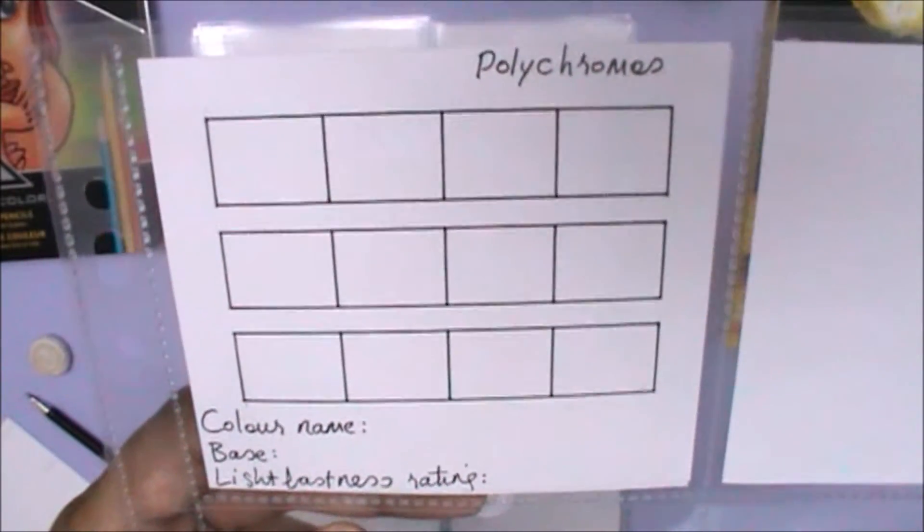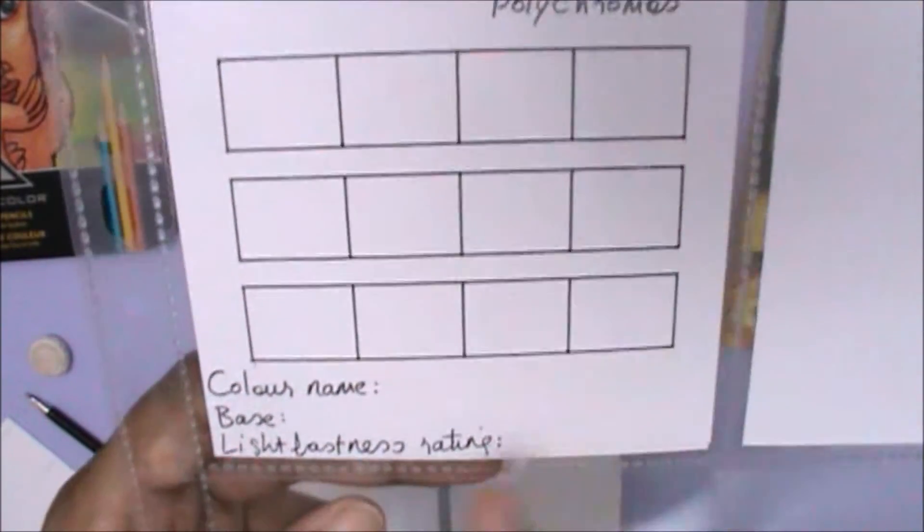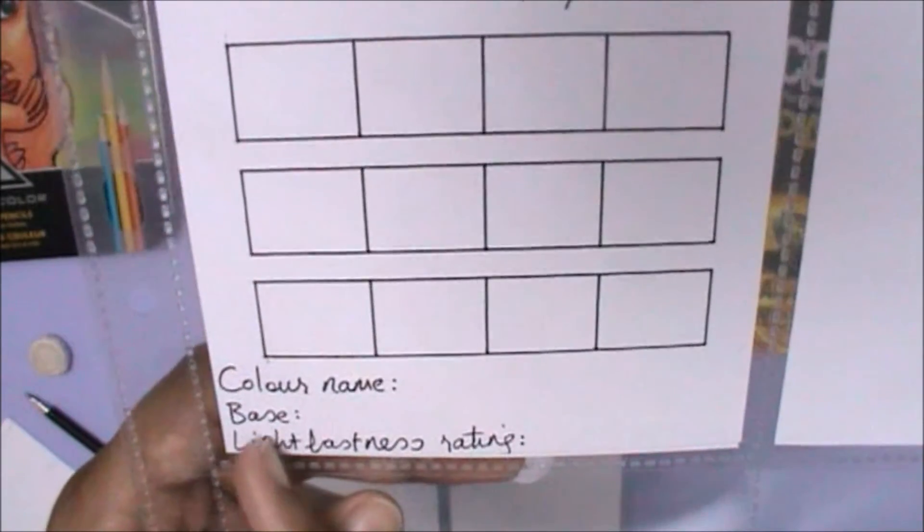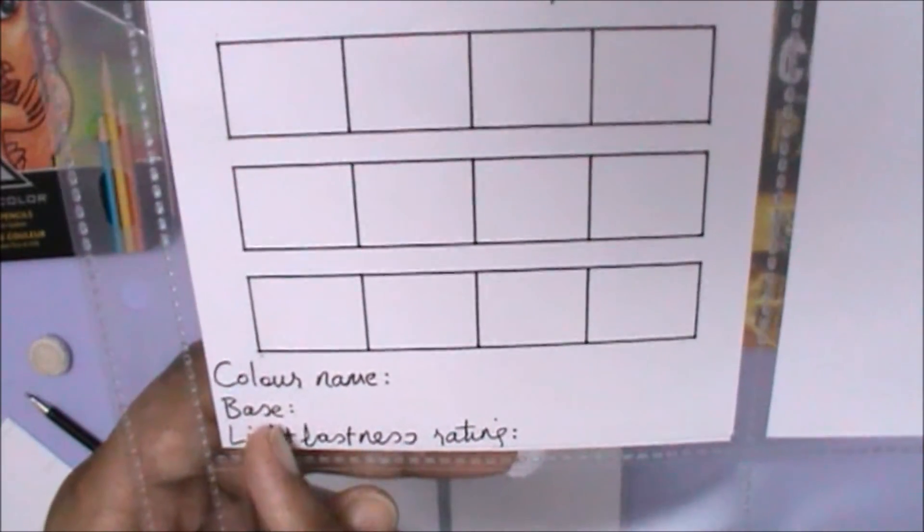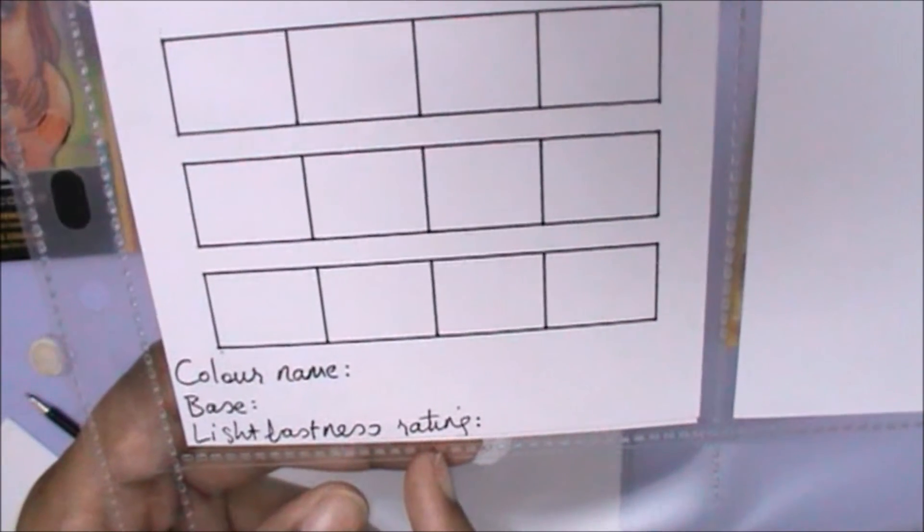Other information that I will be including comes from the book. The first thing you always need to put in there is what the pencil brand is, then down here the color name, the base as in is it oil or wax based, and the lightfastness rating.